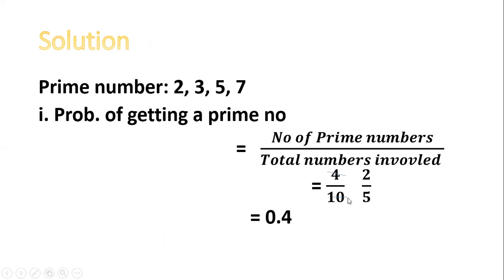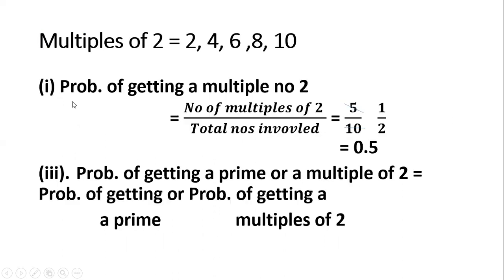Four over ten simplifies to two over five, which gives us 0.4. The next question is the probability of obtaining a multiple of two. The multiples of two are 2, 4, 6, 8, and 10 — so these are five possible outcomes. The probability of getting a multiple of two is five over ten, which is one over two, giving 0.5.